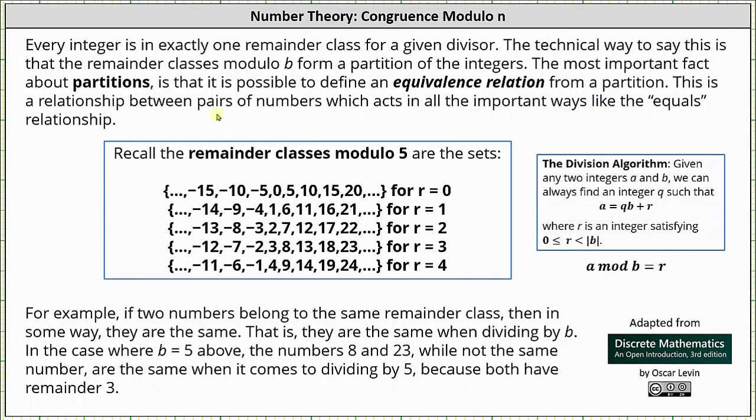Recall from the previous lesson below we have the remainder classes modulo five, where the remainder class for r equals zero is the set of integers when divided by five the remainder is zero. The remainder class for r equals one is the set of integers when divided by five the remainder is one, and so on.